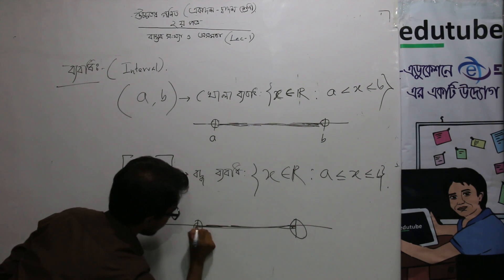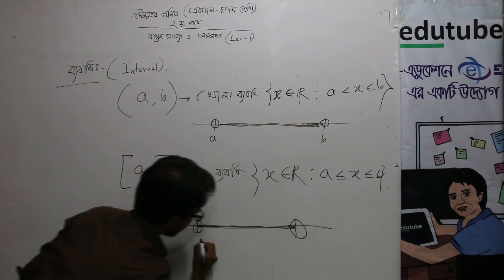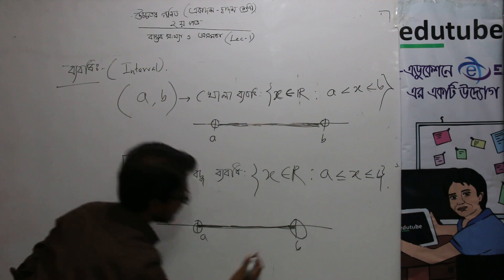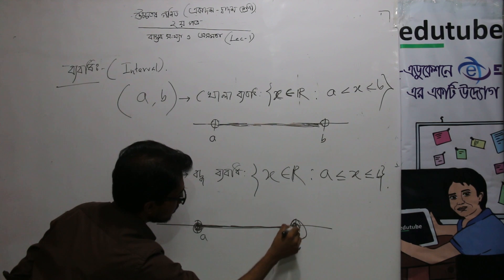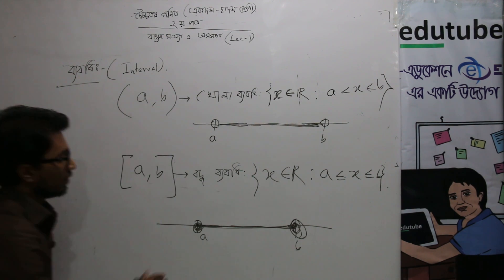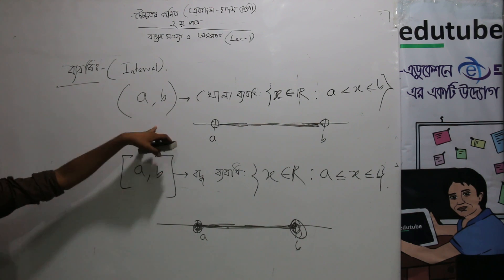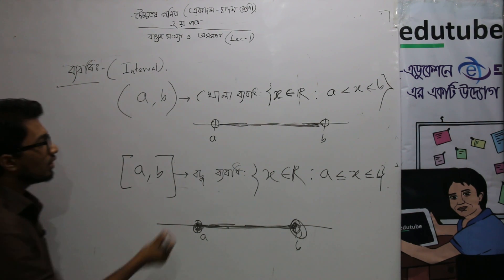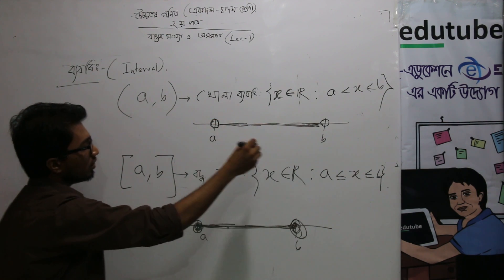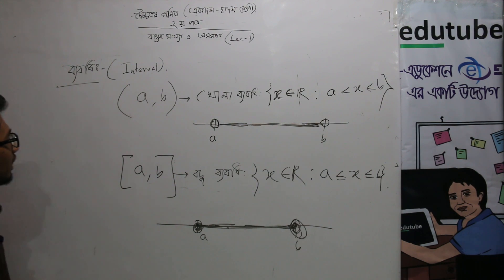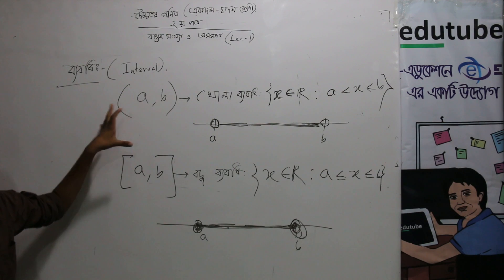Let me show you the same thing. This is the same thing. A, b — this is how much of a, b. This is what it is, B. This is how much of a b. Now, I will show you the same thing. They are a, b. This is not a b. This is your b. This is a b.